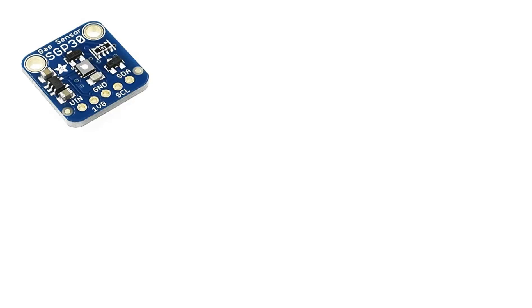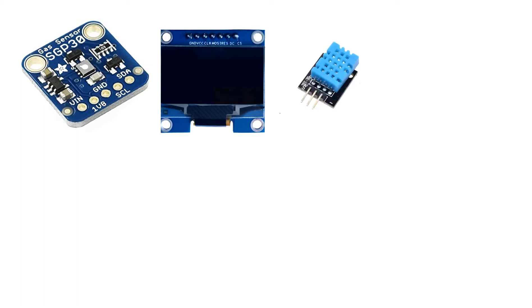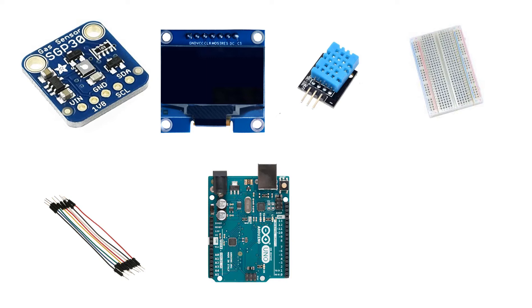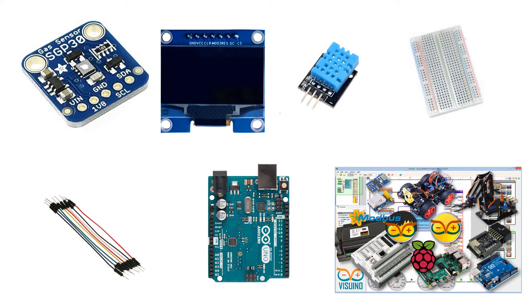For this project you will need a SGP30 air quality sensor, OLED I2C display, DHT11 sensor, breadboard, jumper wires, Arduino and Viswino software.